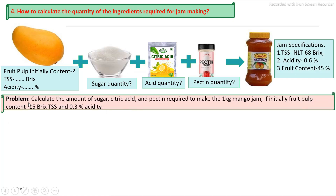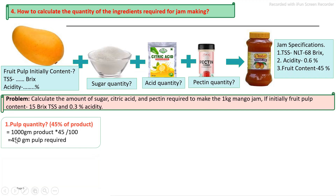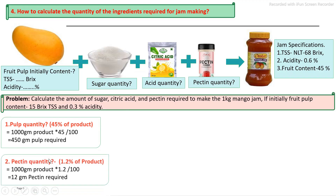Here is a problem: how to calculate the amount of ingredients required. Calculate the amount of sugar, citric acid and pectin required to make 1 kg of jam, if the fruit pulp initially contains 15 degree brix total solids and 0.3% acidity. First, the quantity of fruit pulp required to make 1 kg of jam: 45% fruit pulp is required in the final product, therefore 1 kg × 45% = 450 grams of pulp. Second, pectin quantity: pectin is added at 1 to 1.2%, so 1 kg × 1.2% = 12 grams of pectin required.